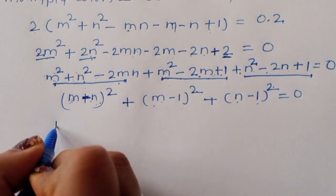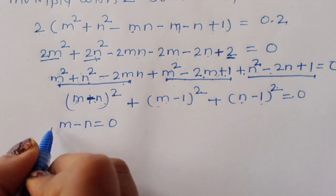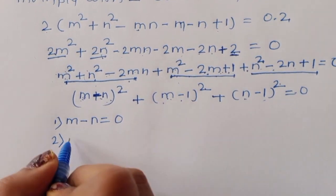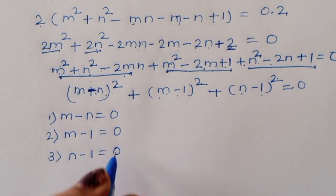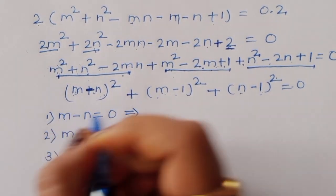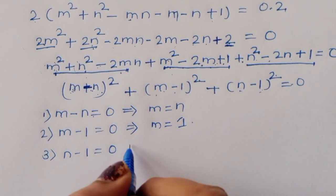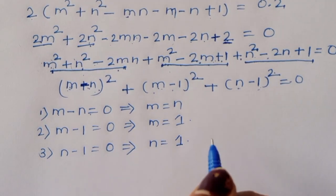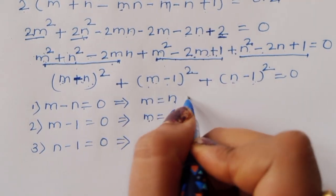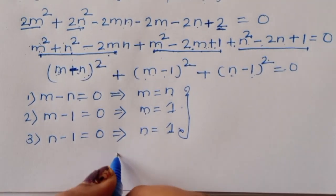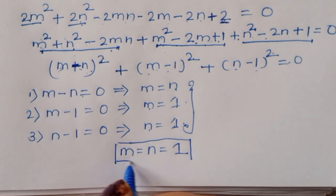Now we have three squared terms: (m - n)² + (m - 1)² + (n - 1)² = 0. Since each squared term must be zero: m - n = 0, m - 1 = 0, and n - 1 = 0. Therefore m = n, m = 1, and n = 1. So m = n = 1.